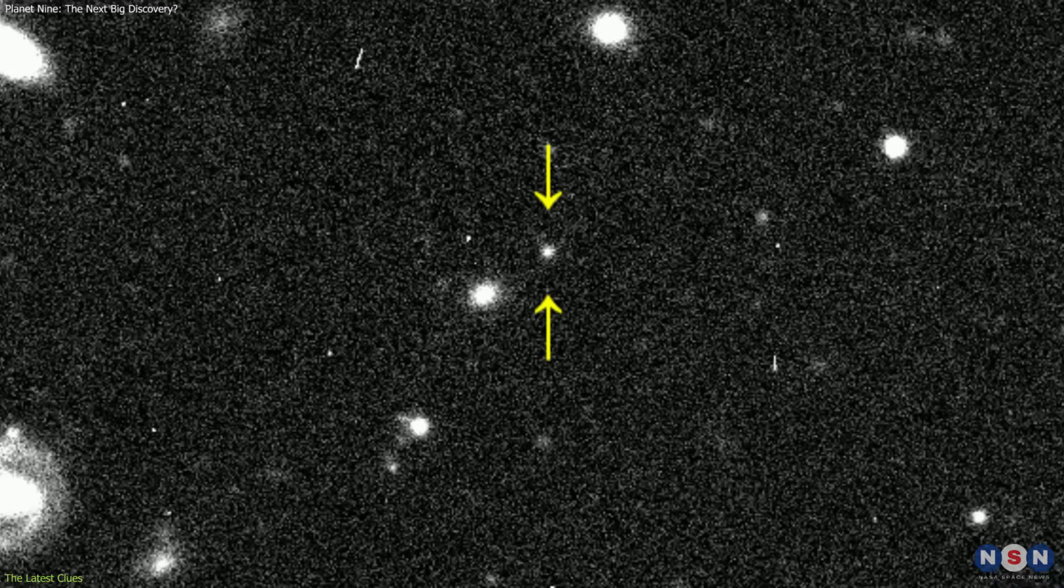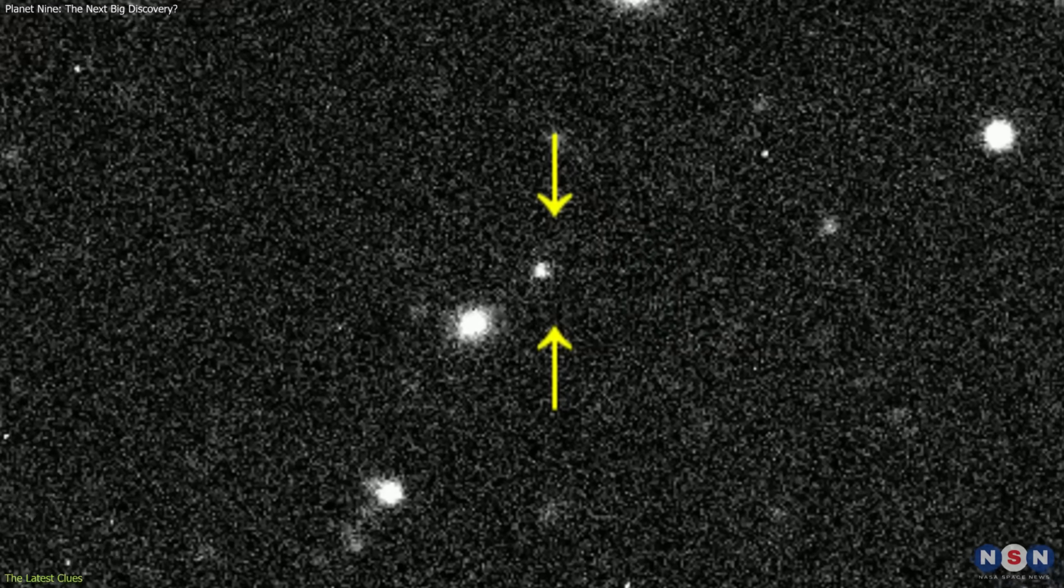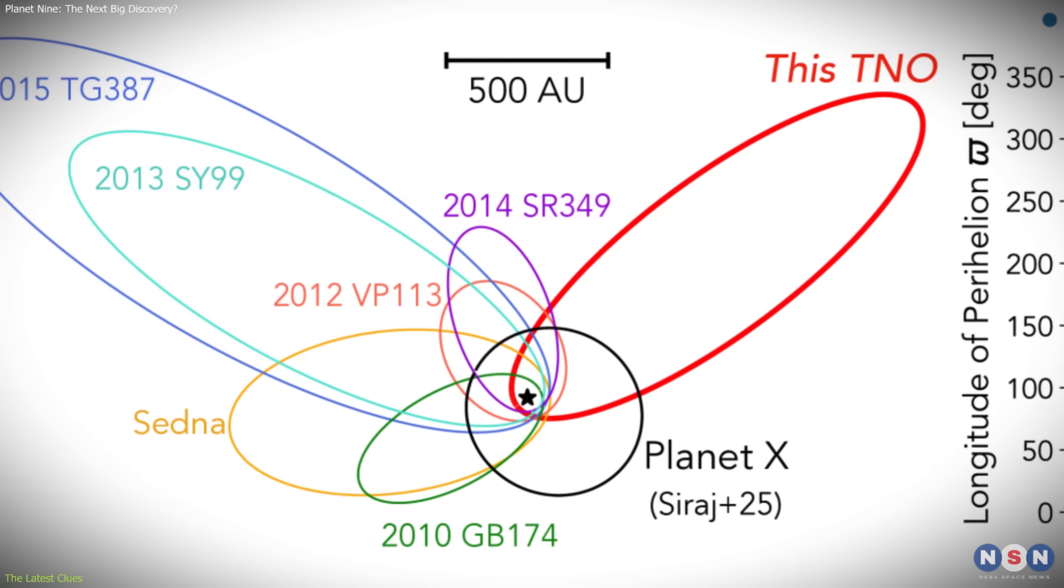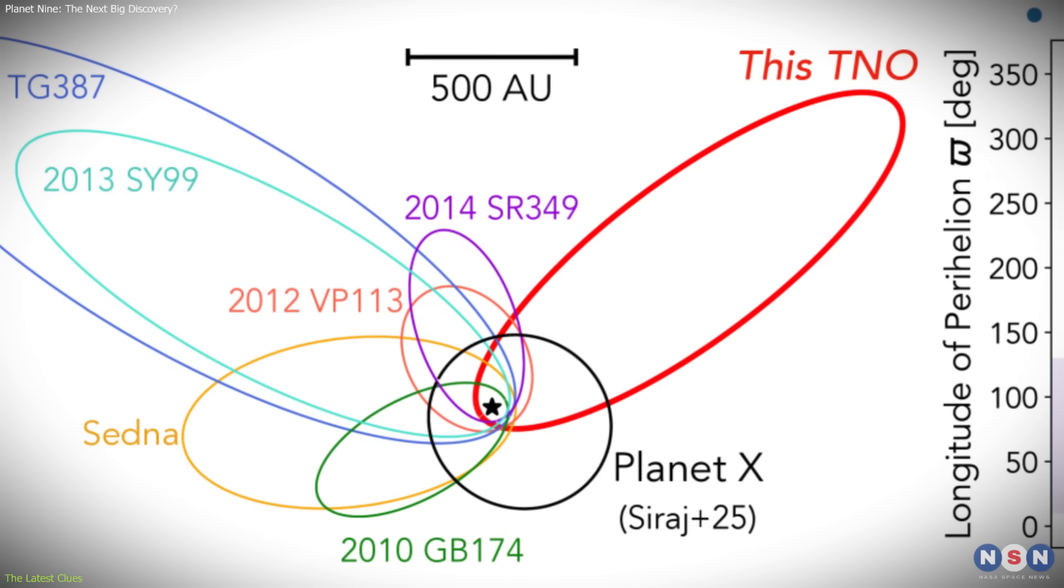Another newly identified object, 2017 OF201, also followed an orbit that doesn't fit neatly within Planet 9's prediction.